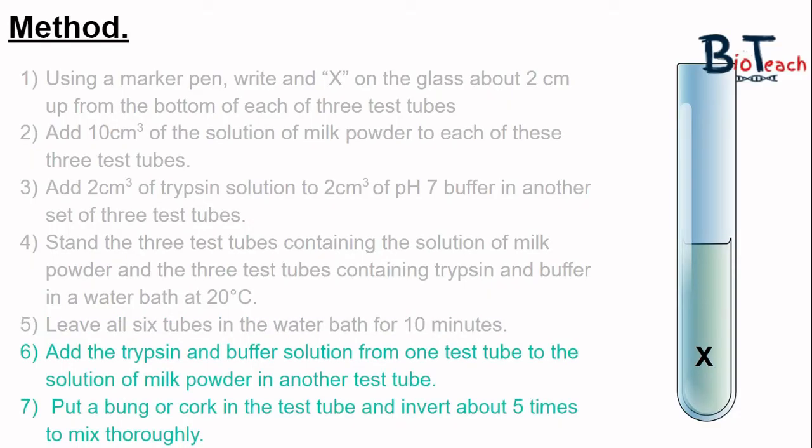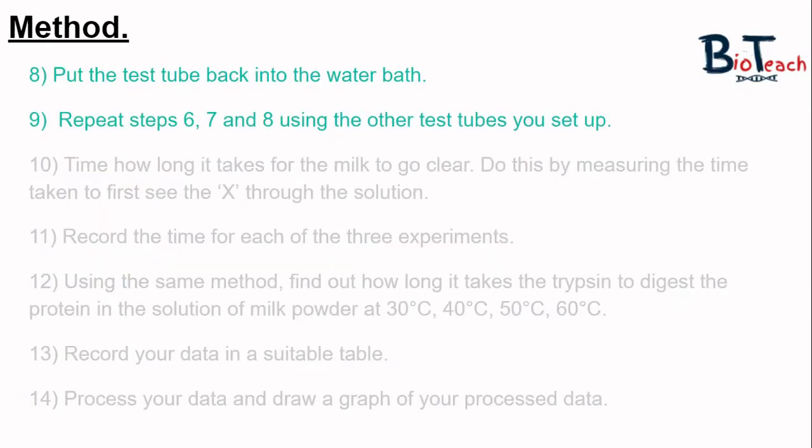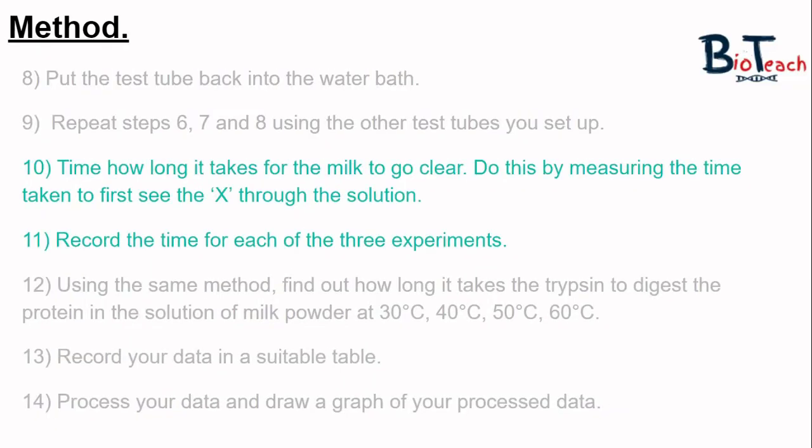Once the 10 minutes is up and the temperature of the contents of the tubes is the same, we would mix up one of the tubes with the enzyme buffer and the milk solution. By putting a bung at the end and inverting it, we are mixing it properly, then we would put it back into the water bath. We repeat the same with the other two test tubes, and we time how long it takes for the milk to go clear. Basically, you look at the tubes to see when that X at the bottom of your tube appears through the milk solution.